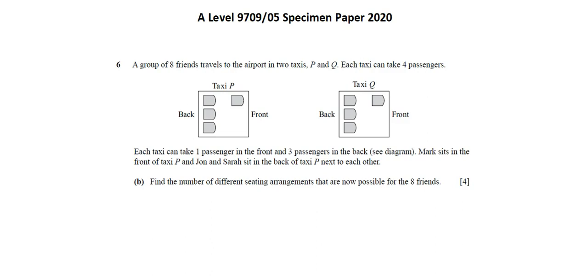Note, in this requirement, we're dealing with arrangements. The order does matter, so we're working now with permutations. Starting with taxi P. Three of the seats are taken. One is available. So, of the group of eight, five remain.